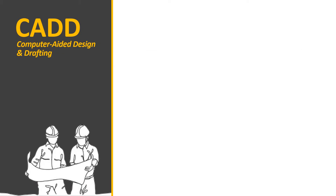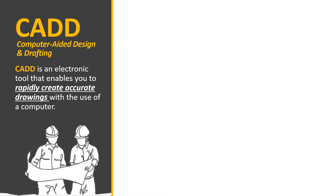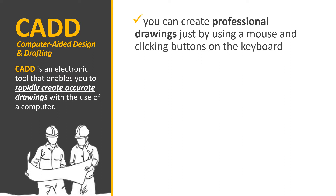Computer Aided Design and Drafting is an electronic tool that enables you to rapidly create accurate drawings with the use of a computer. In fact, an experienced computer drafter can normally produce a construction drawing in less time than it would take if done manually. That is the advantage of CAD software — you finish your drawings faster. Specifically, you can create professional drawings just by using a mouse and clicking buttons on the keyboard.